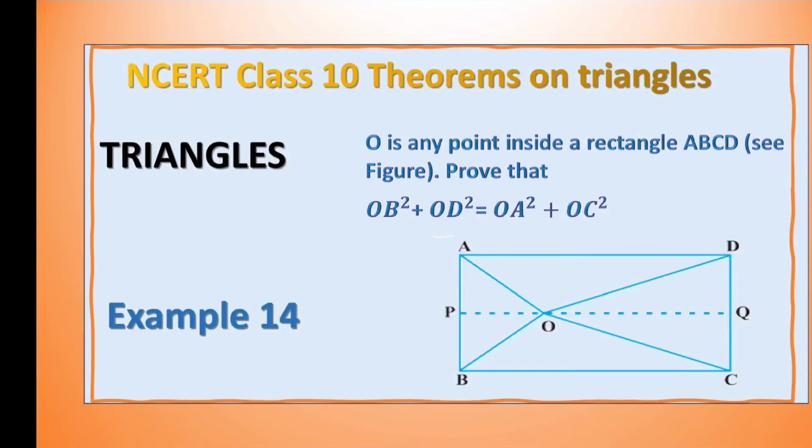In this video, let us solve example 14 of the chapter Triangles. The question is: O is any point inside a rectangle ABCD. See the figure they have given here. Prove that OB² + OD² = OA² + OC².